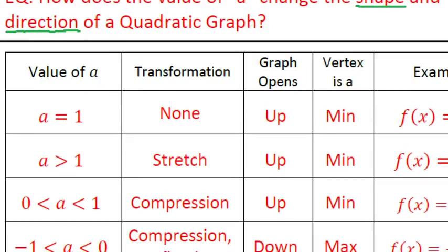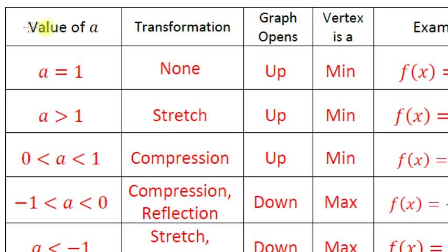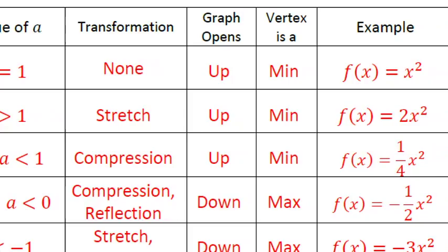Let's talk about this table. It has four different values of a. For each, we'll identify: what transformation is happening to the graph, which way the graph opens, whether the vertex is a maximum or a minimum, and then see examples of a quadratic with that particular value of a.